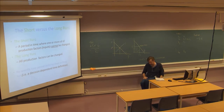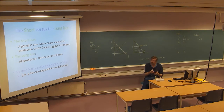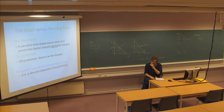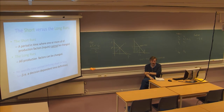In microeconomics, especially on the production side, we often make a distinction between the short run and the long run. The title suggests this has something to do with time, and to some extent it does. The short run is defined as a period of time where one or more production factors or inputs cannot be changed — we allow ourselves to fix some input factors. In this case the inputs are capital and labor.